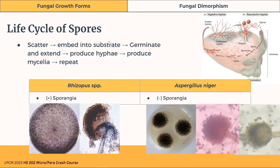Regarding spores, they can either be formed in a sac or sporangia, as seen in Rhizopus — where the sac has ruptured but the outline shows they were once contained in a sac — as compared to Aspergillus, where there is no sac containing them. They're basically naked spores.